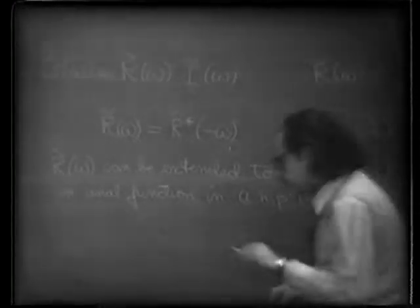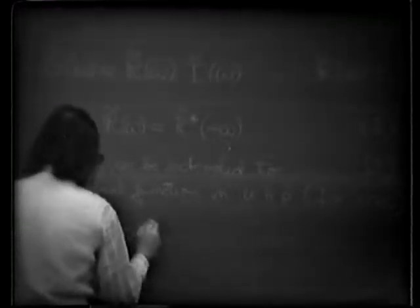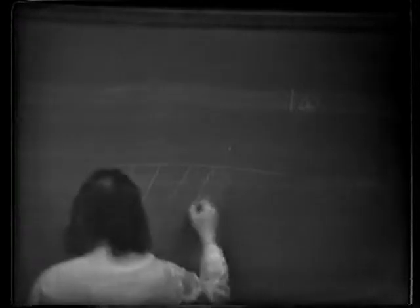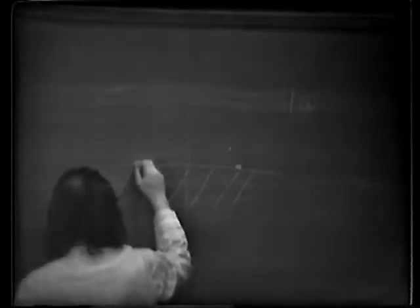It is convenient to switch to a new variable z, defined as z equals omega squared. In terms of z, let me draw the complex z-plane. In the complex omega-plane, we know that R is analytic in the upper half plane, and we know its value here is the complex conjugate of its value at minus omega. In the complex z-plane, the entire upper half omega-plane maps to all of the z-plane except for a cut along the positive real axis. And the value above the cut is the complex conjugate of the value below, those being the images of the two points on the real omega axis.